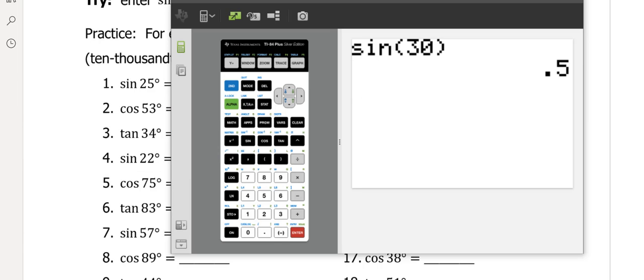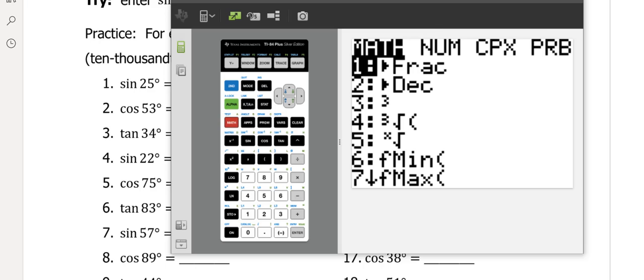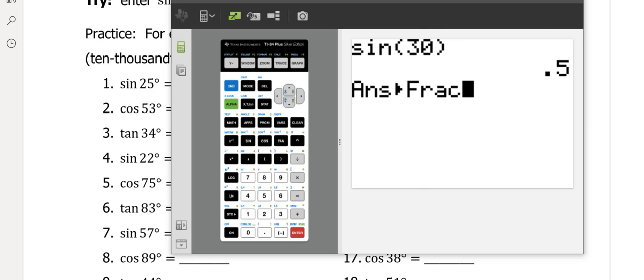Now if you want that as a fraction, you just hit the math button, and the first choice is frac. So you math frac that, and that'll change that answer to a fraction, so we know that the sine of 30 is 1/2 or 0.5.